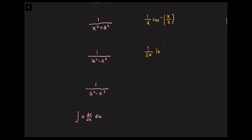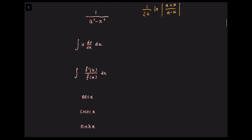Integrating 1 over x squared minus a squared, we have 1 over 2a times ln of (x minus a) over (x plus a). Integrating 1 over a squared minus x squared, we have 1 over 2a times ln of (a plus x) over (a minus x). Integrating u dv/dx dx, which is integration by parts, we have uv minus the integral of v du/dx dx. And integrating f prime(x) over f(x), we have ln of f(x).